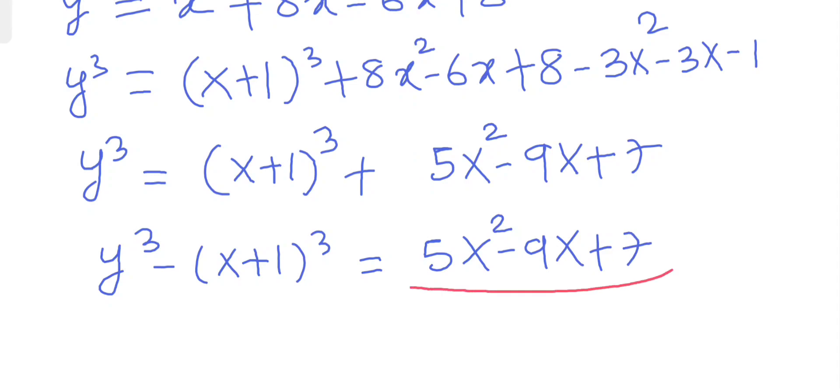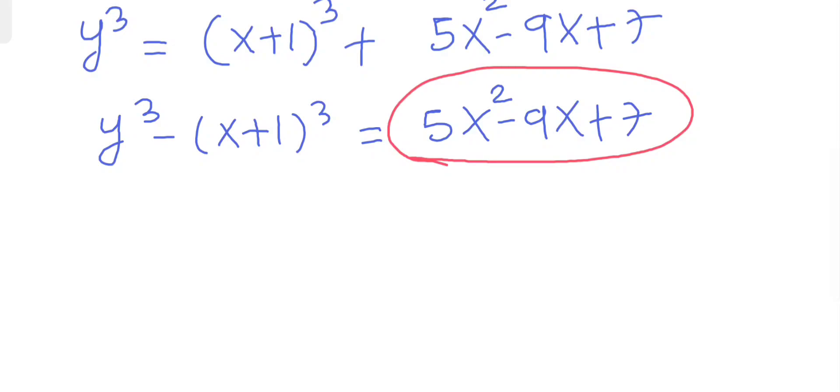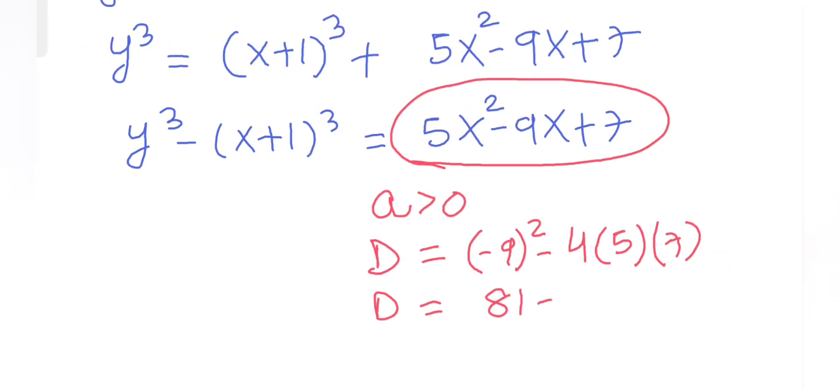Notice here, this is a quadratic equation. If we analyze it, the first coefficient of x², that is a, is positive. And the discriminant D, let's check: D = b² - 4ac = (-9)² - 4(5)(7) = 81 - 140, which is clearly negative.